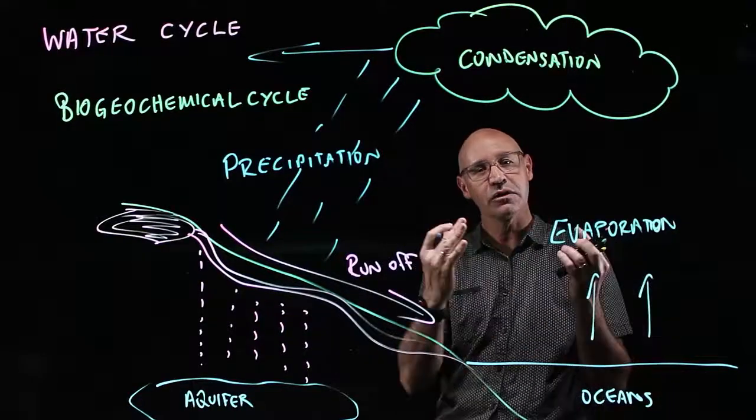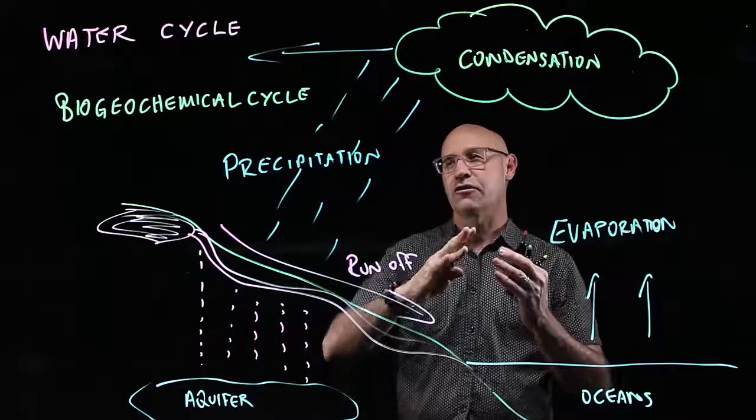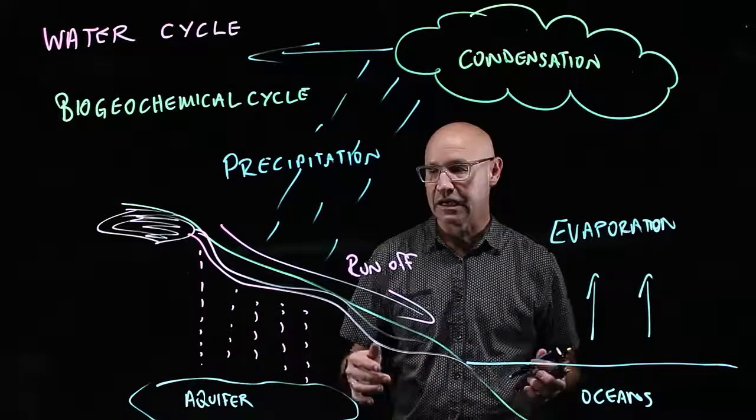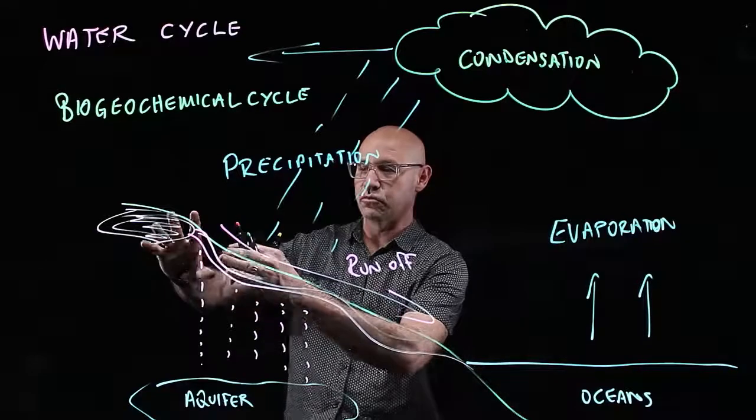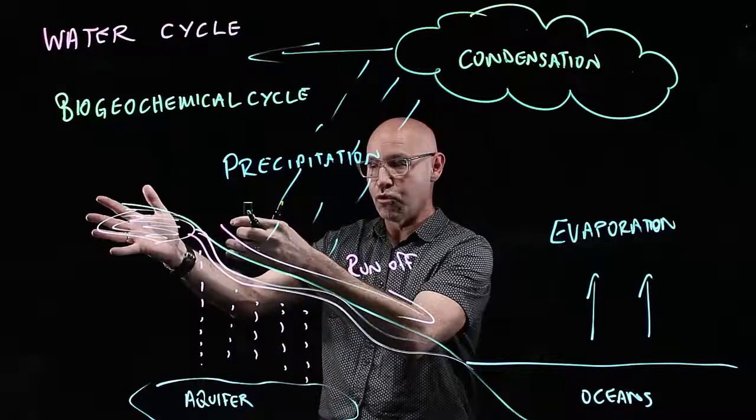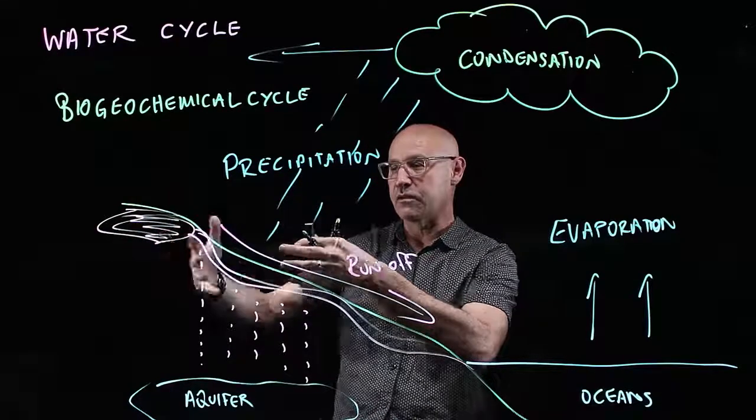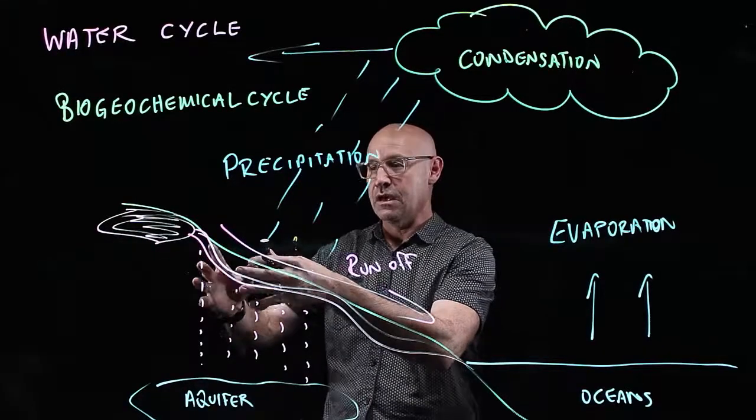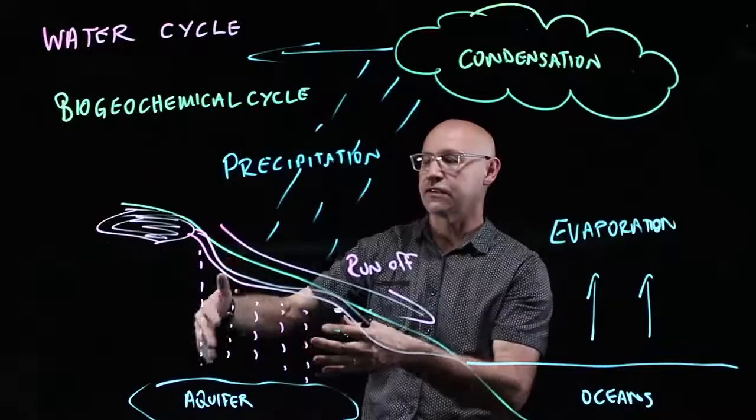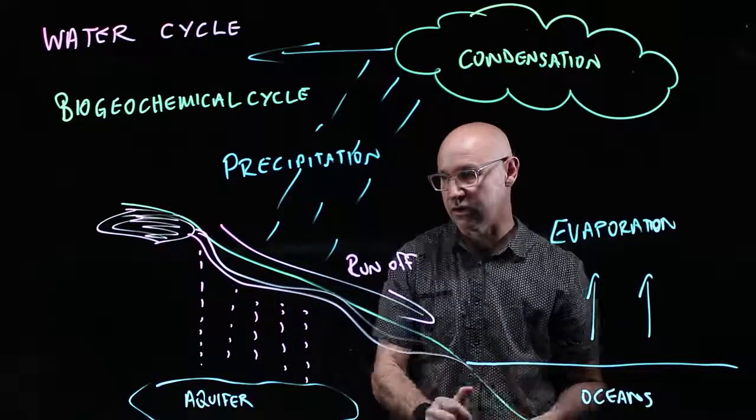Now, human impact. Always thinking about what do humans do to affect these cycles. One of the things is that we dam rivers to hold water in certain spots so it's convenient for us. And some of these can be really quite large. And obviously we've got evaporation off that, and that means there's less water running off down into the oceans.